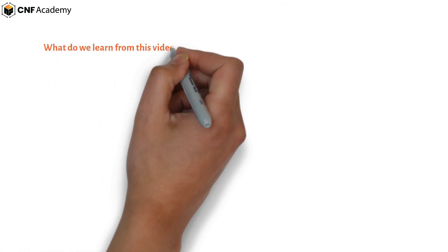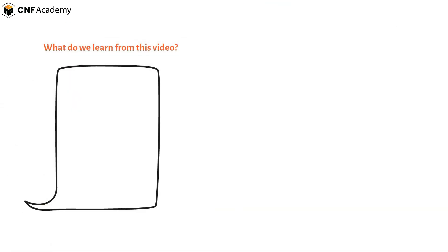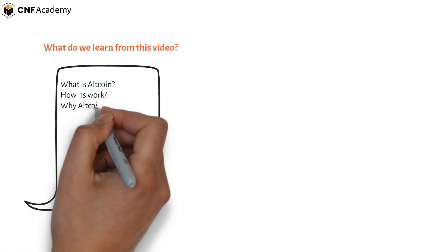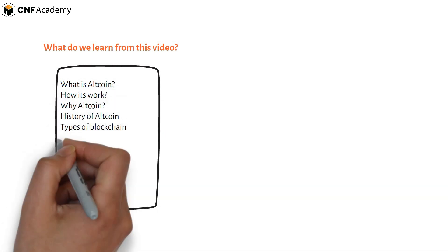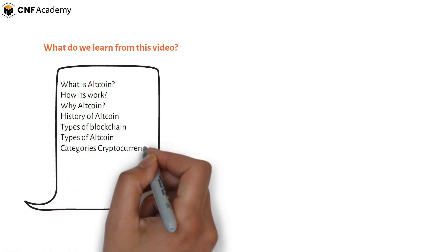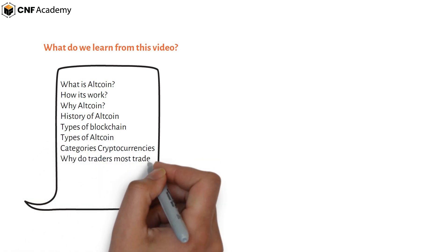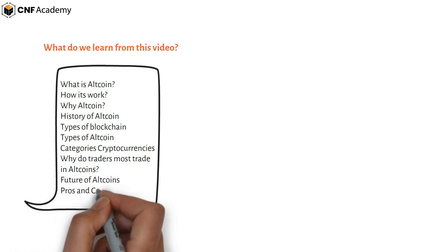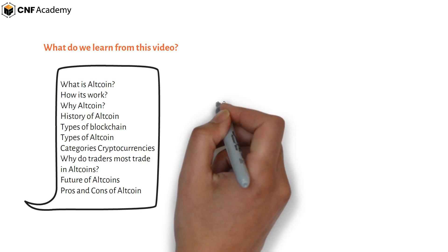What do we learn from this video? What is altcoin? How does it work? Why altcoin? History of altcoin. Types of blockchain. Types of altcoin. Categories of cryptocurrencies. Why do traders mostly trade in altcoins? Future of altcoins. Pros and cons of altcoin.